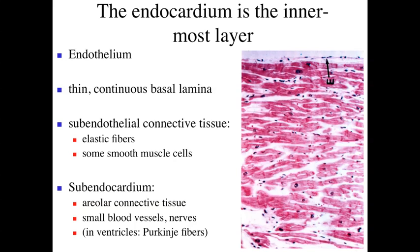Deeper than the subendothelial layer we have the subendocardium, which is a loose connective tissue where we can find blood vessels and nerves. Within the ventricles we'll also find the Purkinje fibers here. The Purkinje fibers are part of the impulse conduction system that allows us to regulate the contraction of the heart.